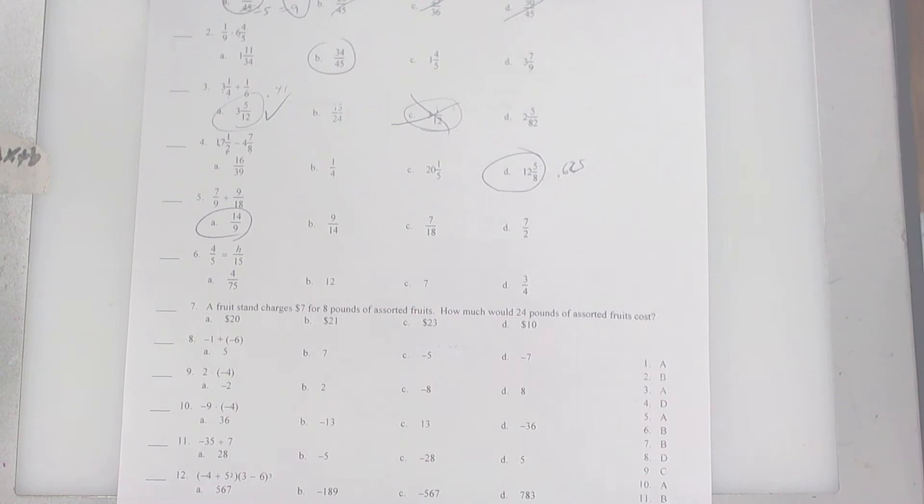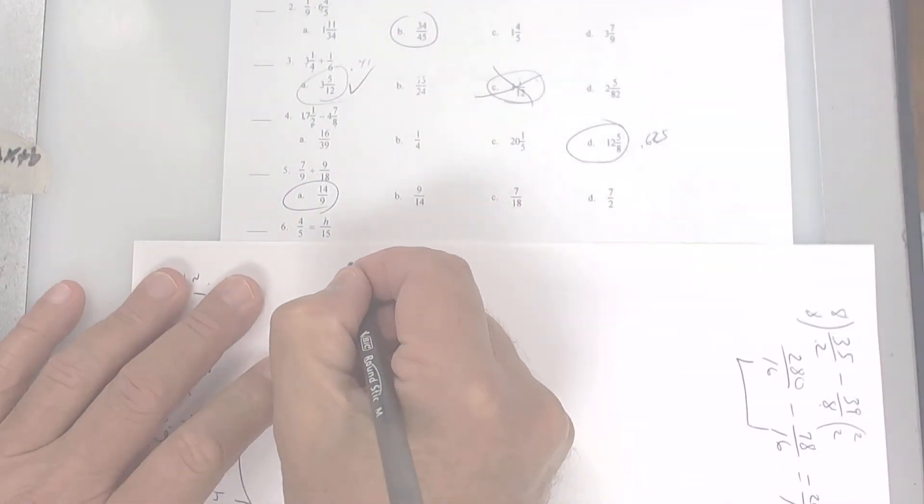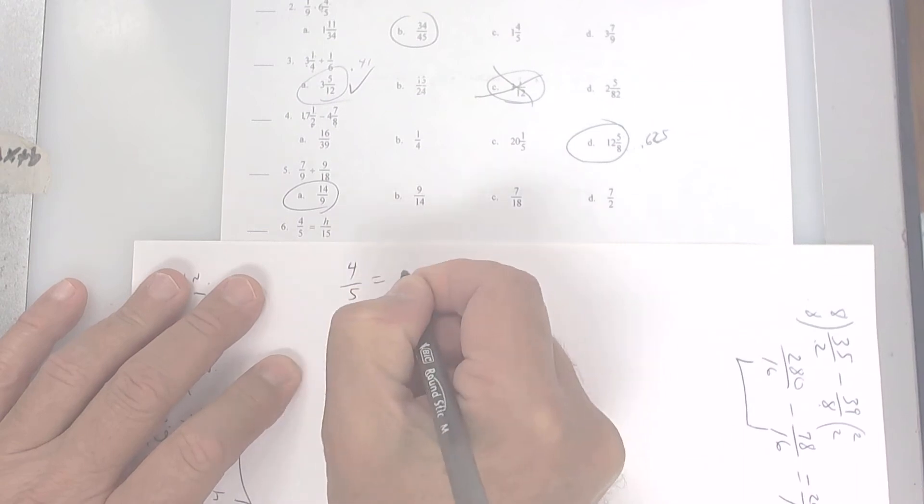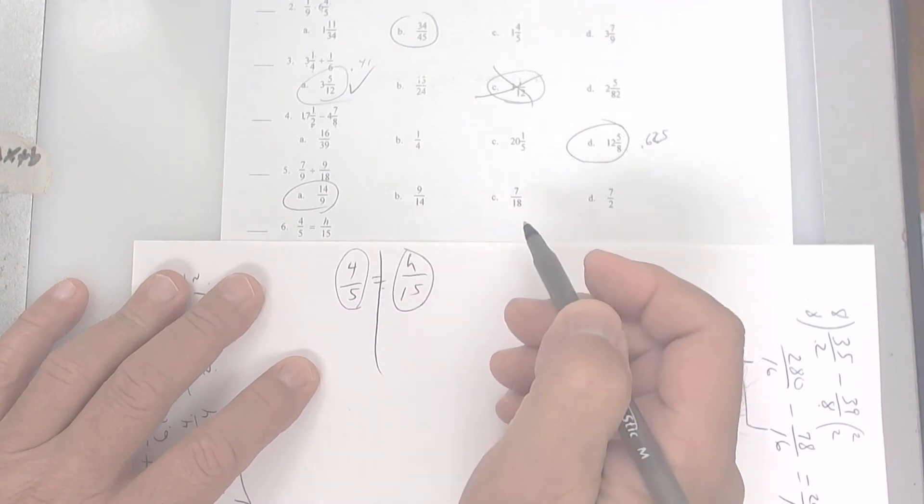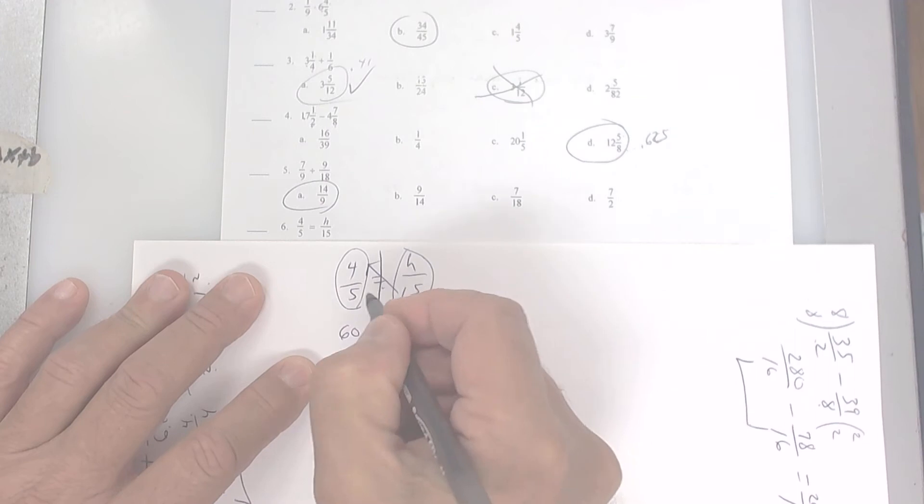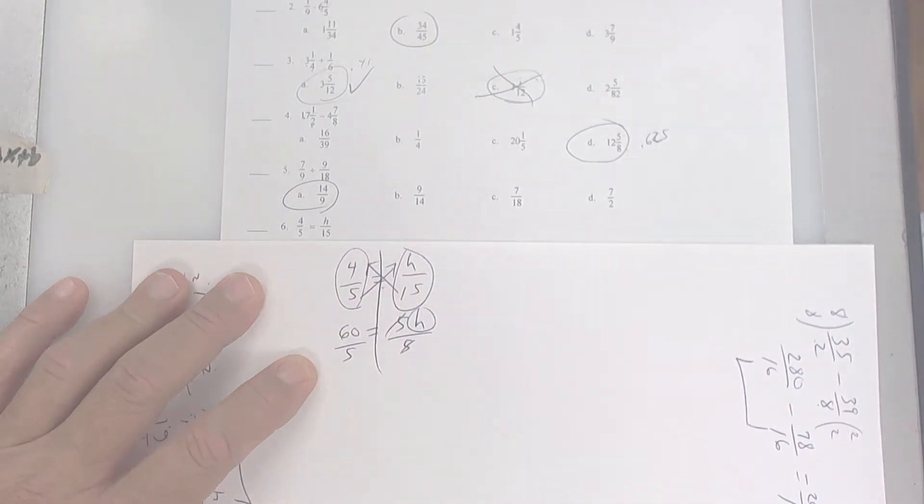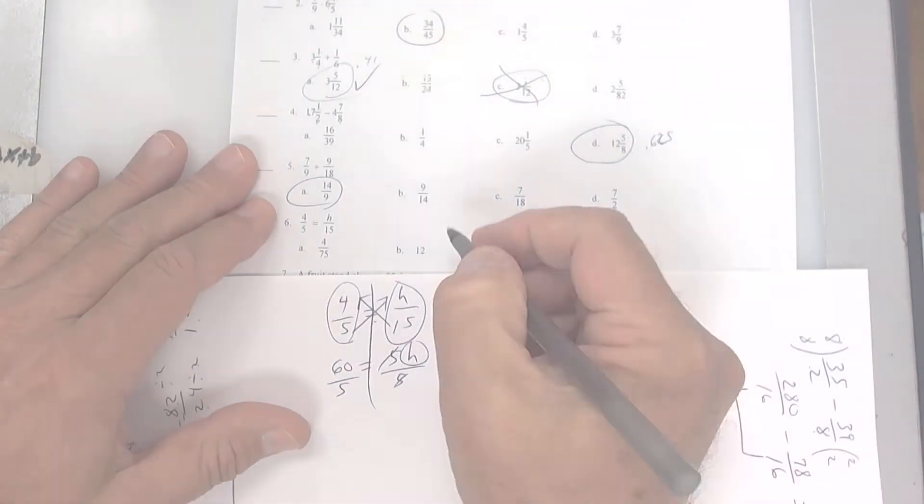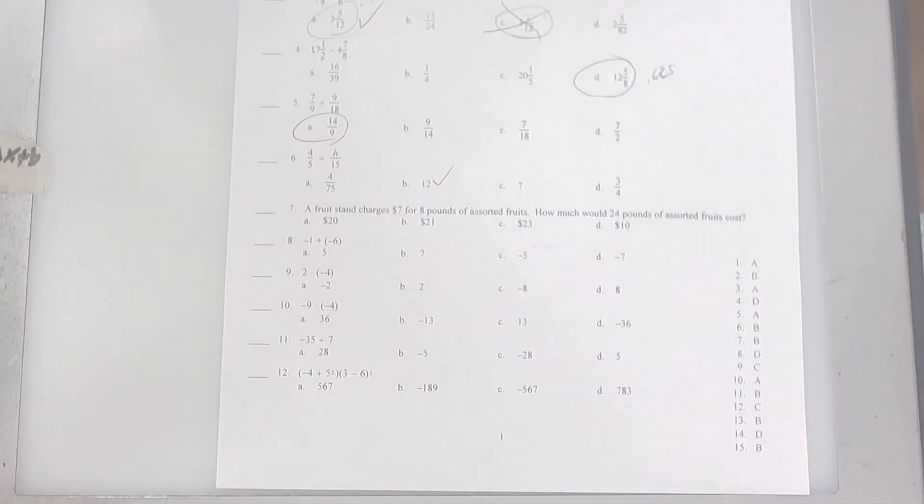Again, you can go back to this video as many times as you want. This is a proportion. I didn't really show you this one, but I'm going to show it to you right now. What you do is you cross multiply. When you have a fraction equal to a fraction, you cross multiply. So that's 60 and 5 times h. You're trying to get h by itself, so you want to divide by 5. I think it's going to be 12. I would go with that one, but you can use your calculator and check it.